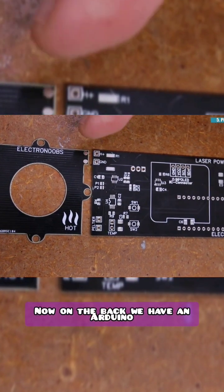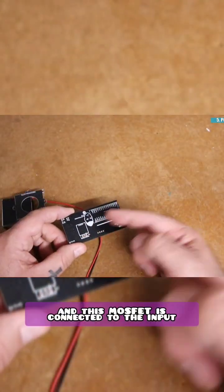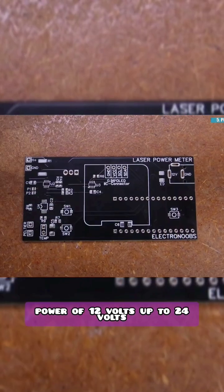Now on the back we have an Arduino which is connected to this MOSFET and this MOSFET is connected to the input power of 12 volts up to 24 volts.